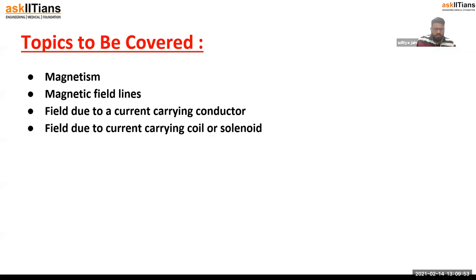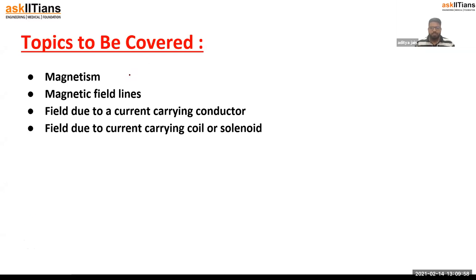So today we are going to learn these topics: first, what is magnetism; then magnetic field lines; then field due to a current-carrying conductor; and then magnetic field due to a current-carrying coil or solenoid.